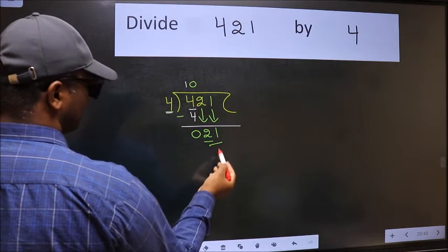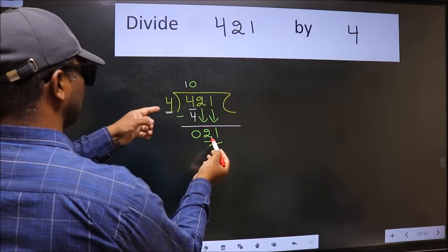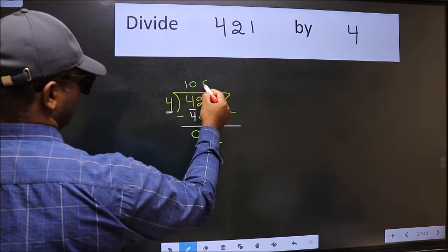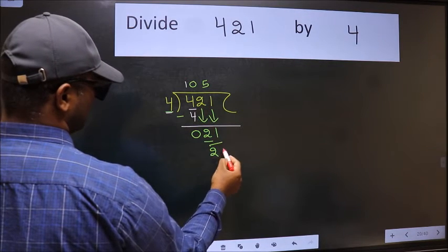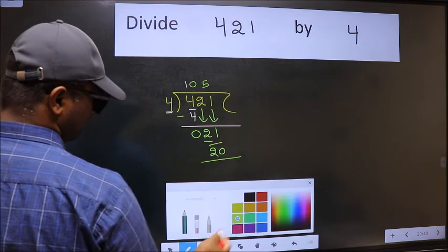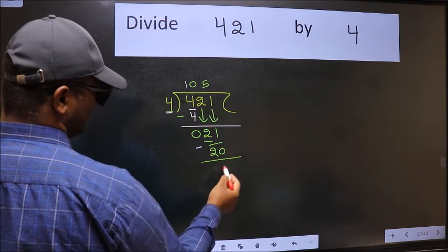Now 21. A number close to 21 in 4 table is 4 fives 20. Now we should subtract. We get 1.